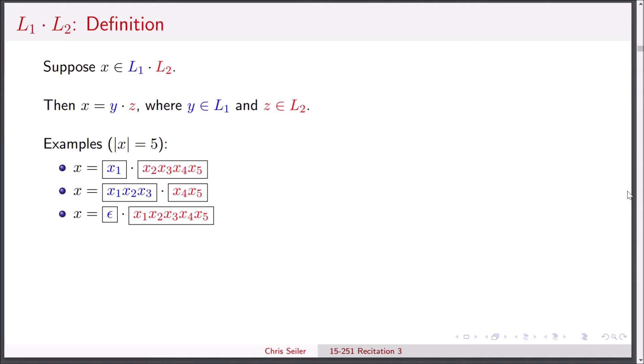So actually in total, for this length five string, there are six possible ways to split x into two strings y and z like this. In general, there are the length of x plus one different ways this can be done. So all we need to do to check if x is in L1 concatenate L2 is consider all of these possible splits and if at least one of them works, we know that x is in L1 concatenate L2.